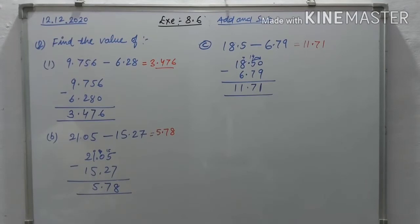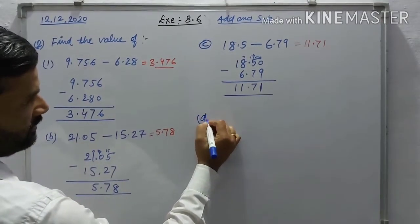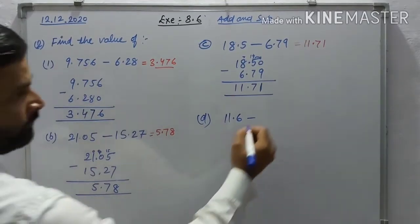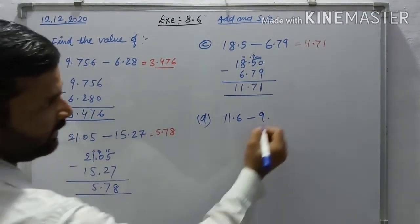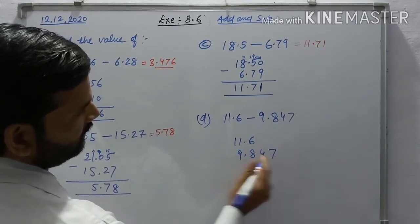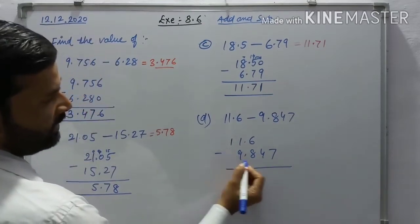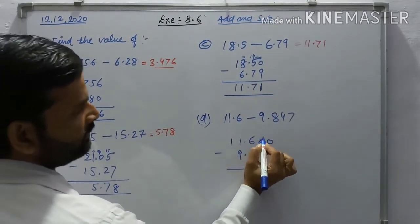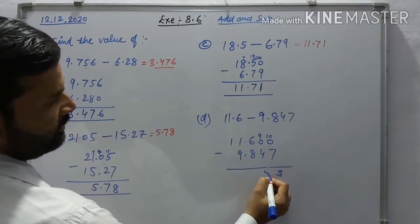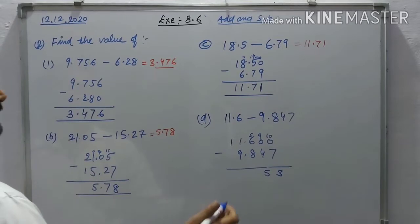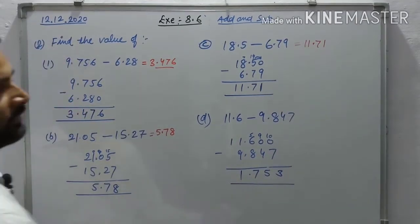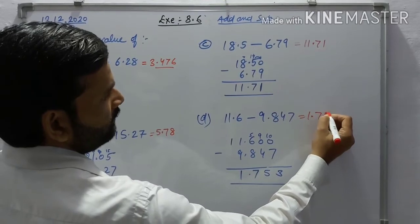Part (d): 11.6 minus 9.847. Write 11.600 and 9.847. Put zeros, carry forward: 10 minus 7 is 3, 9 minus 4 is 5, 15 minus 8 is 7, carry — the answer is 1.753.